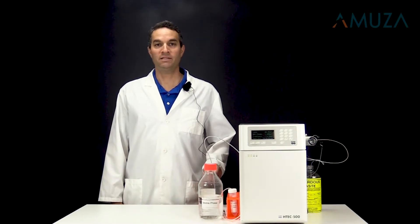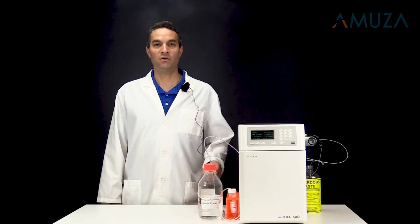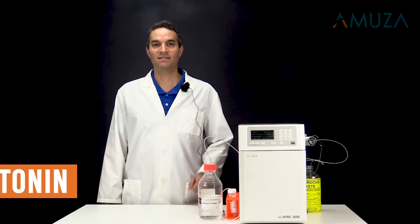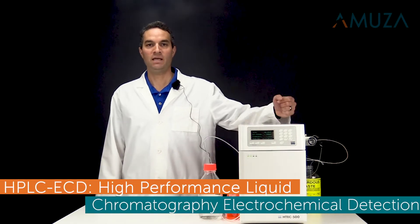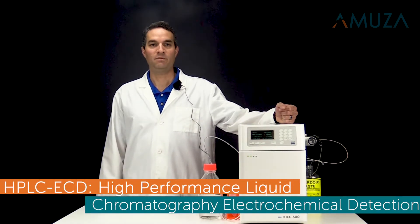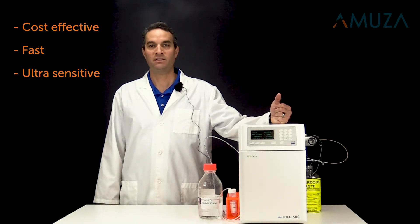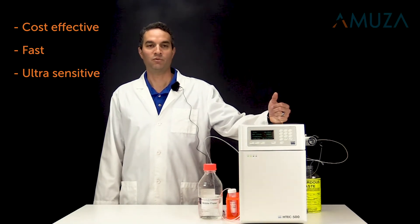In this video, we'll show you how to detect and analyze dopamine and serotonin levels in brain microdialysis samples in just five minutes. For this analysis, we'll use the HPLC ECD system because it is a cost-effective way to get fast and ultra-sensitive data down to the femtimol range.